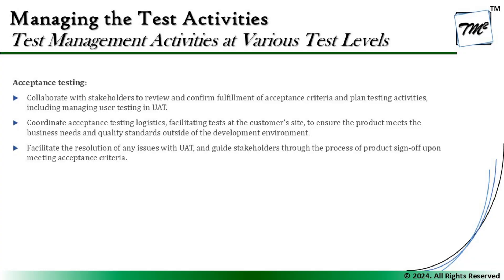It's not always necessary to follow this exact approach — the customer has complete freedom to define their own way of testing the system. They may have their own test cases or their own automation, depending on their technical skills and capabilities. In some organizations, our test cases are used as part of UAT. The second key activity is to coordinate acceptance testing logistics — not implementing or planning for the customer, but coordinating to help them understand, facilitating tests at the customer side to ensure the product meets business needs and quality standards outside the development environment.